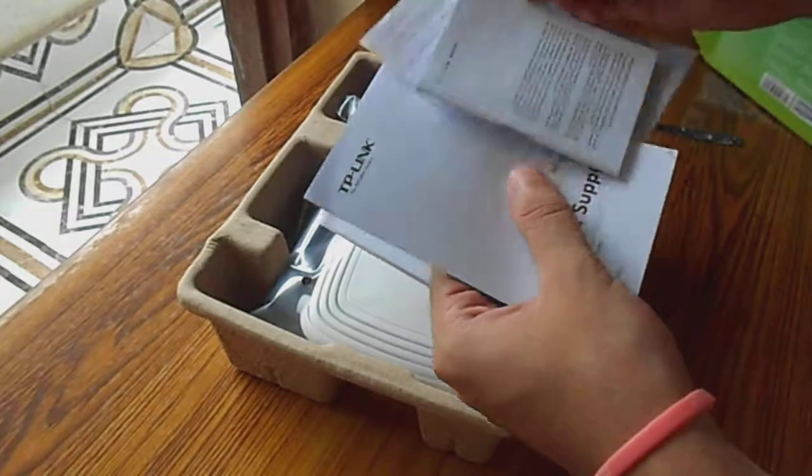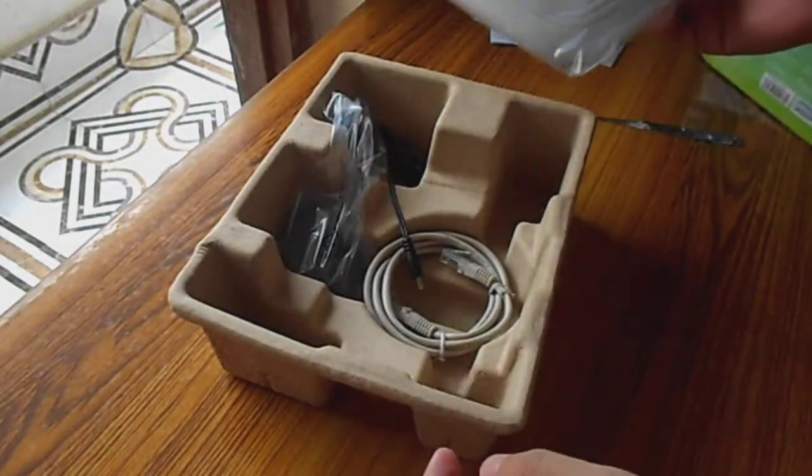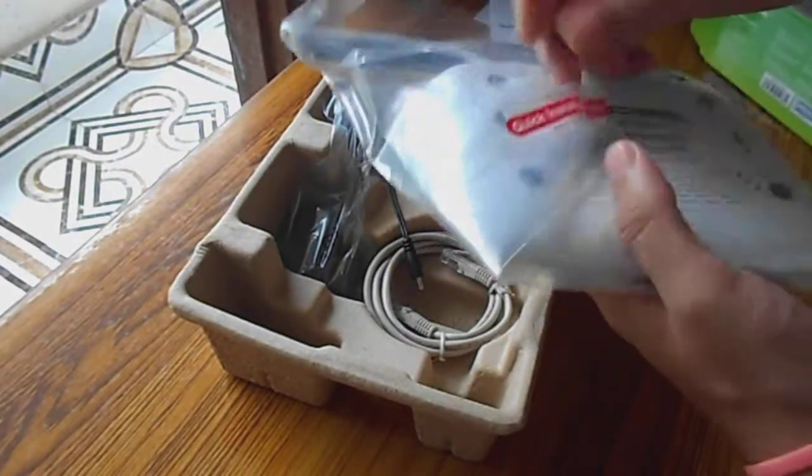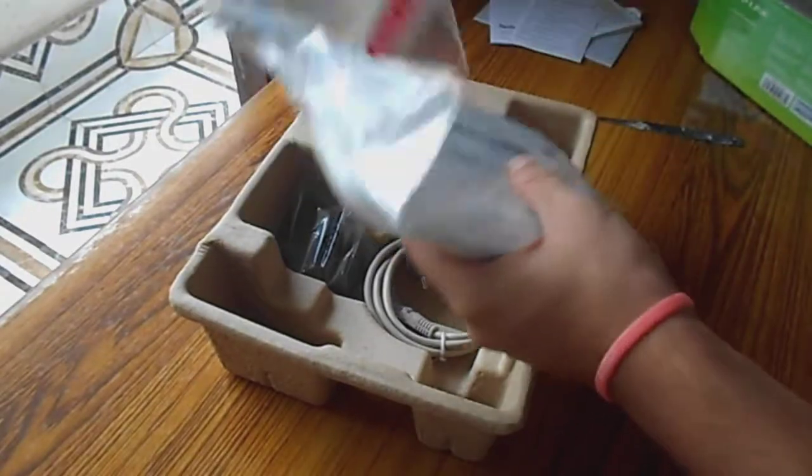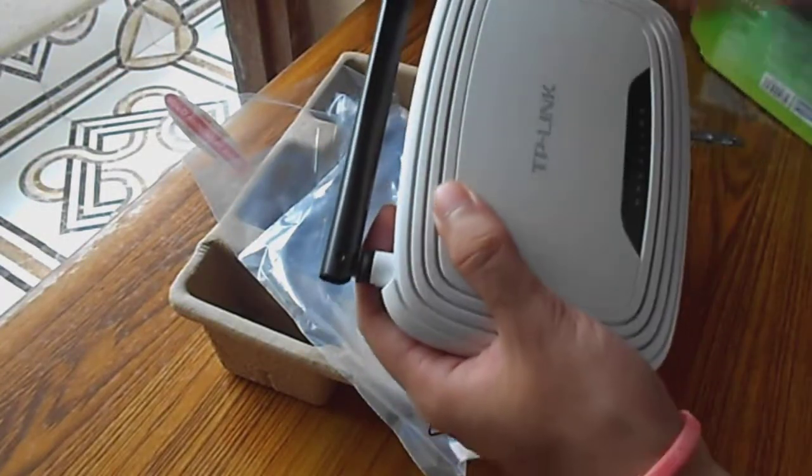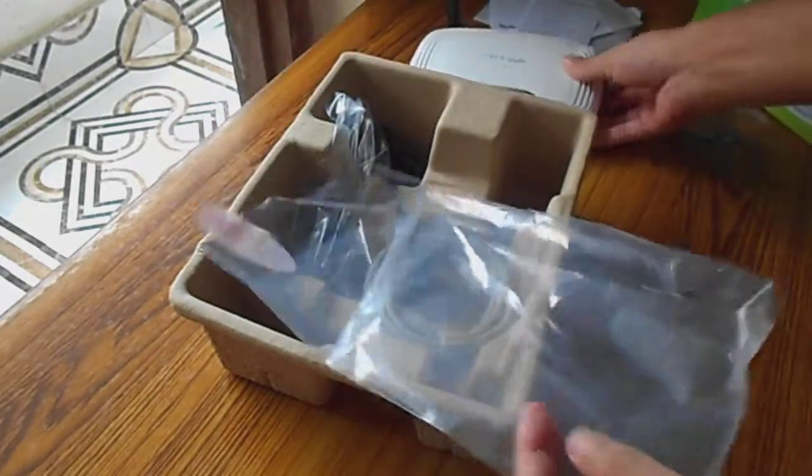Let's get them out. Here it is, the router. It's pretty light for my first impressions. Here's the quick installation guide. Let's get the router, put it aside and see what else is in the box.